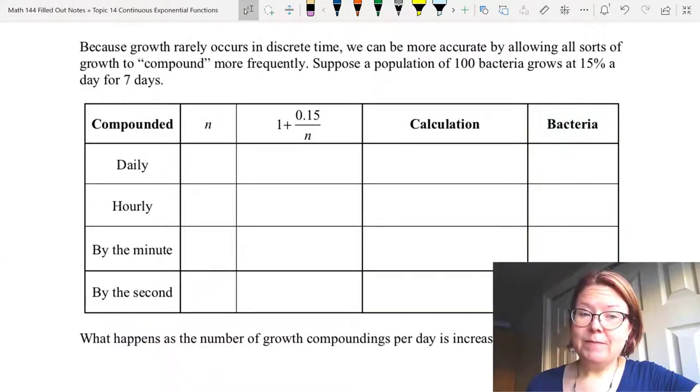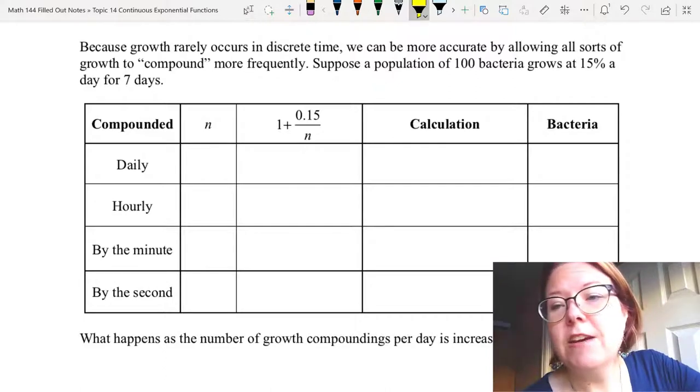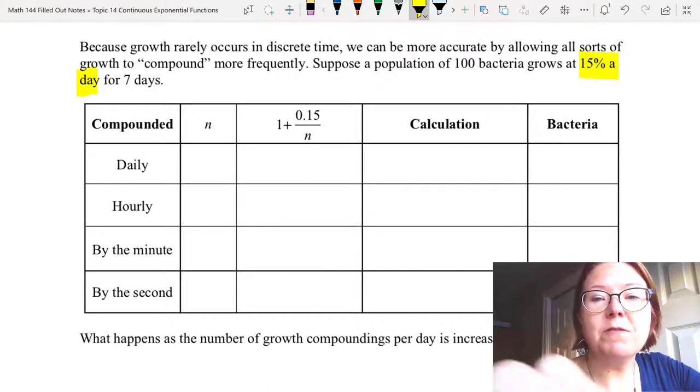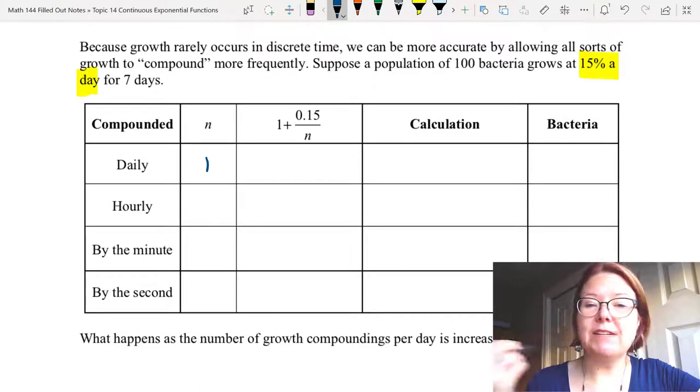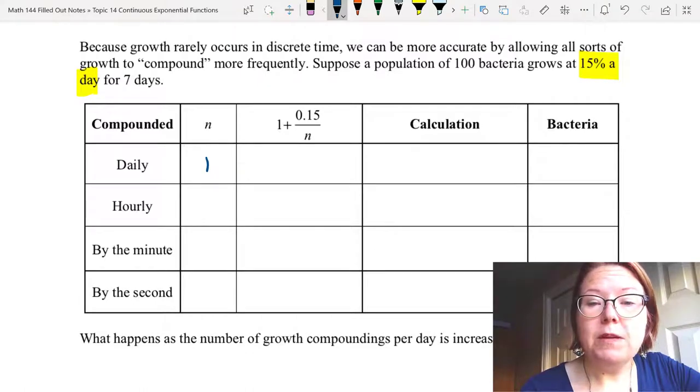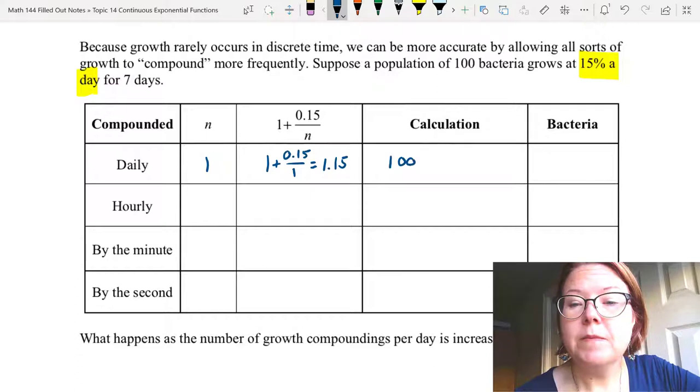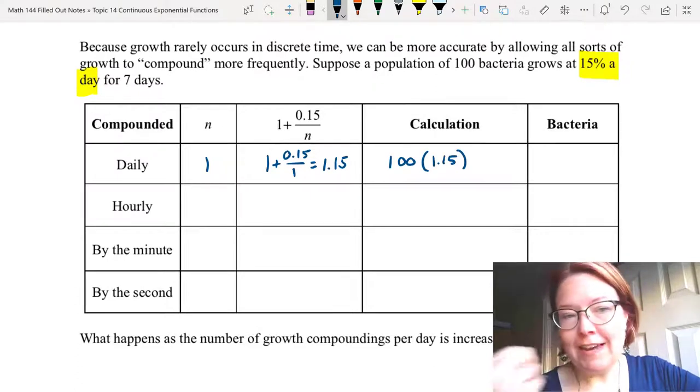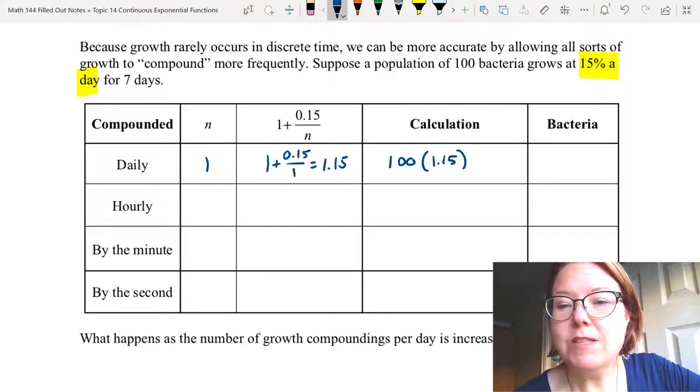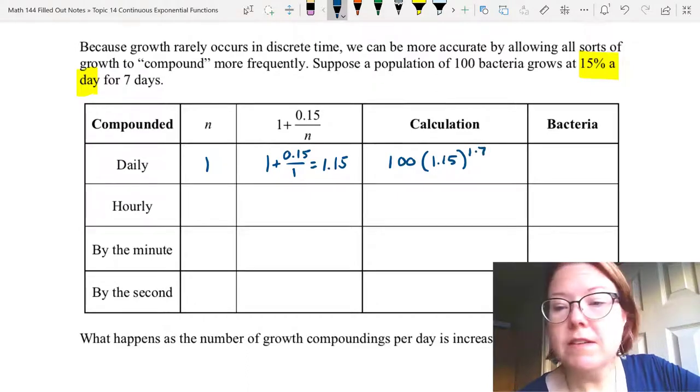Let's start with daily. If we're compounding daily, remember that in this problem the bacteria is growing at 15% a day. So the number of compoundings in this case is 1. We're compounding every day. The 1 + 0.15/n would be 1 + 0.15/1, or just 1.15. For our calculation we would start with 100 bacteria, multiply that by 1.15, and then in the exponent we need to account for the fact that we're doing this for seven days. So we would take the number of compoundings, which is 1, and multiply that by 7. The result is 266.0 bacteria.